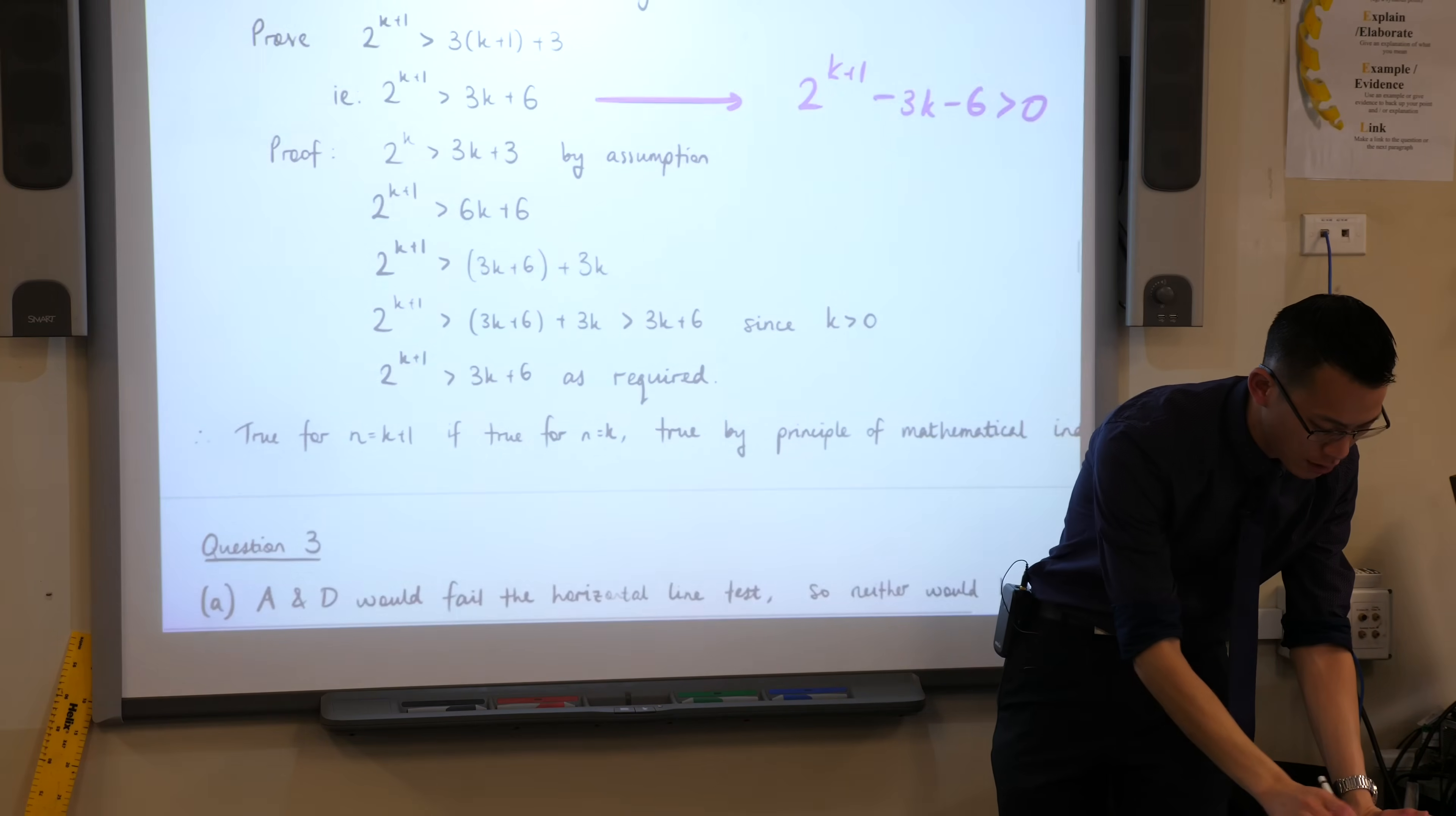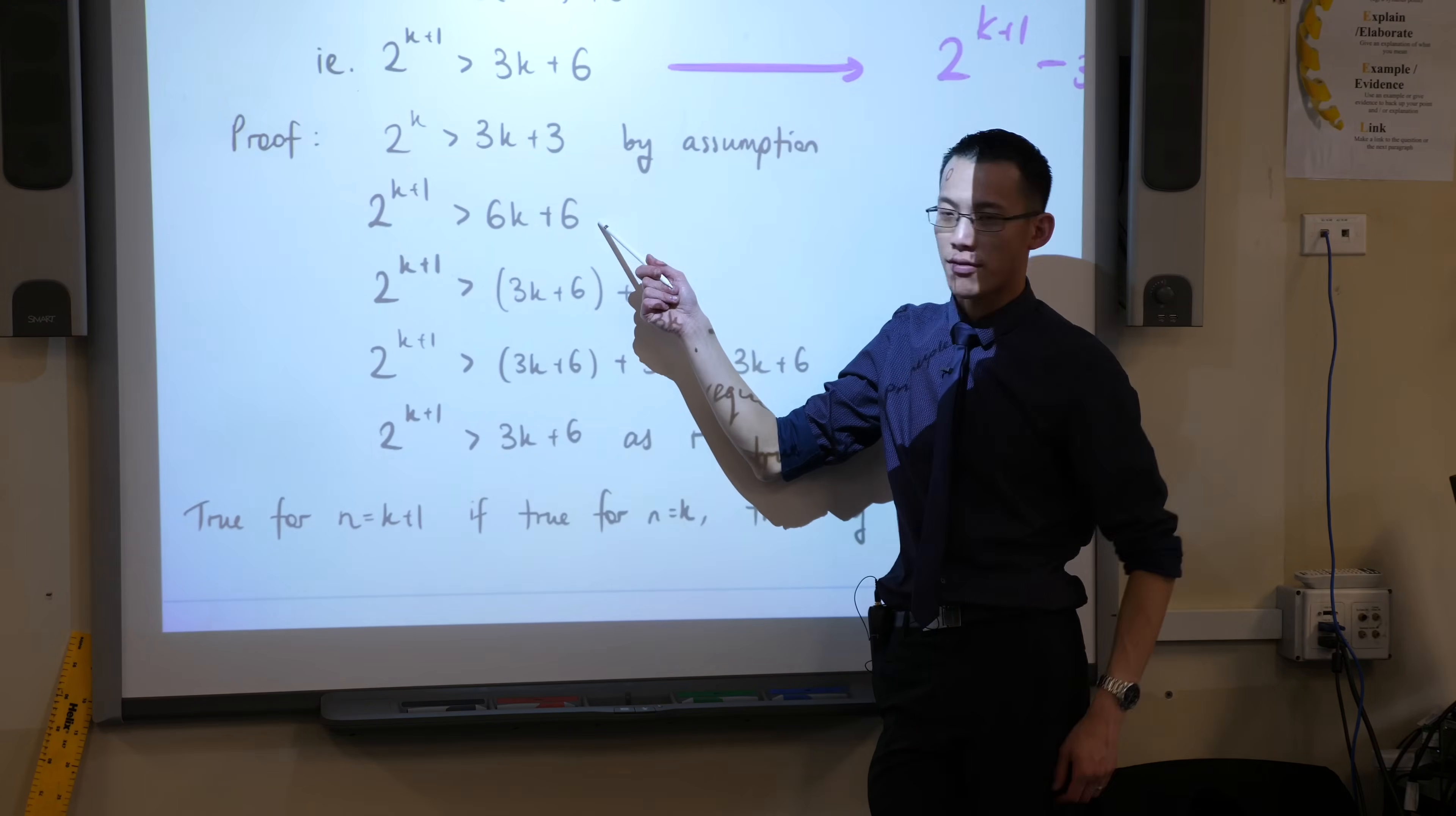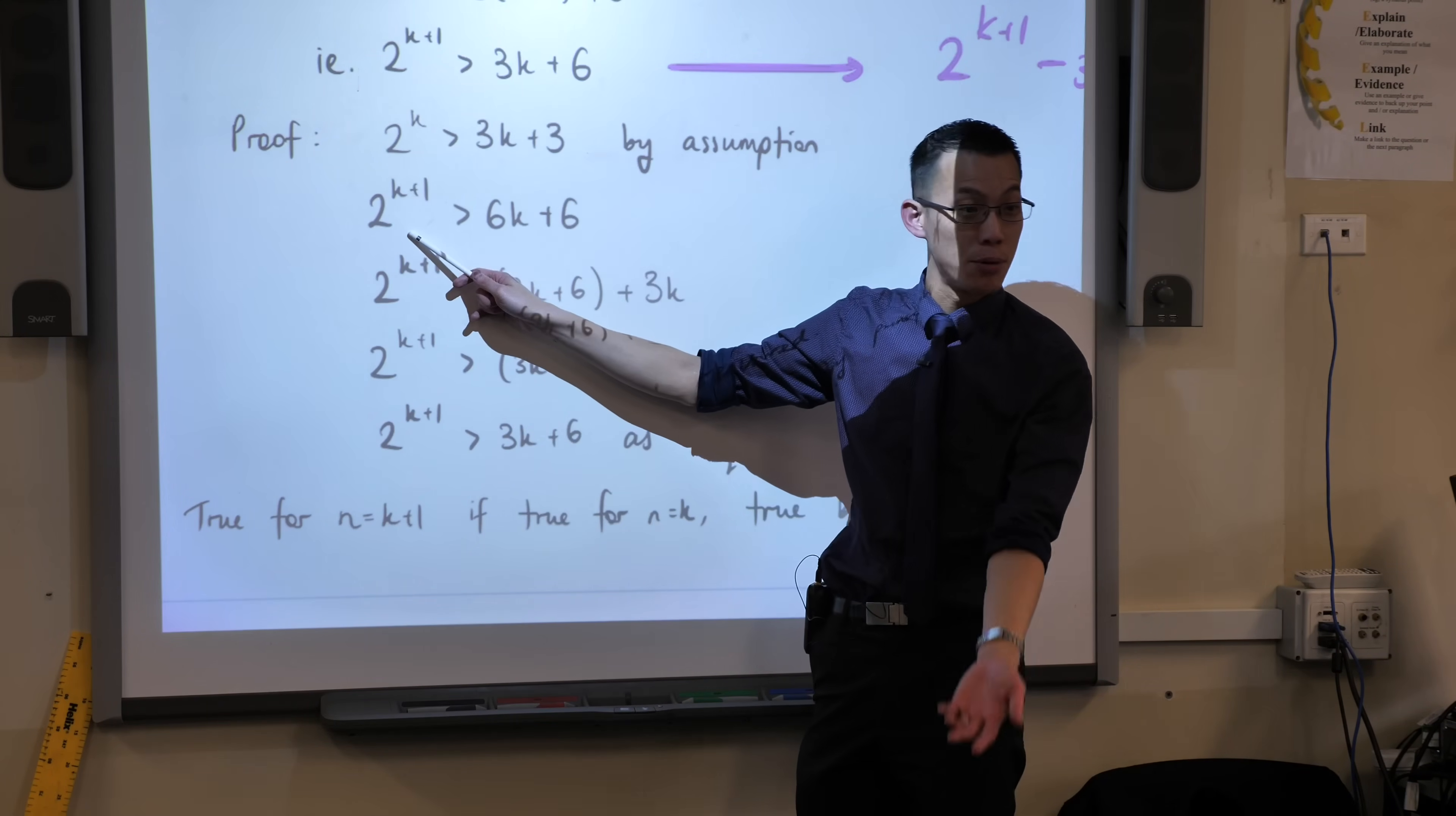I decided not to do that. I just started off with the assumption step, and then I tried to twist and turn that, so it looked like the prove step, the k plus 1 step. So this is this. What can you see I did from this line to this line? What did I do to both sides? I multiplied by 2, and the reason why is because in my prove, the thing I'm trying to prove, there's a 2 to the k plus 1 on the left-hand side, so I put it there as well.